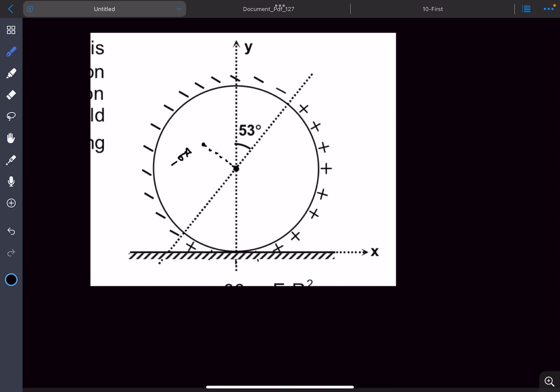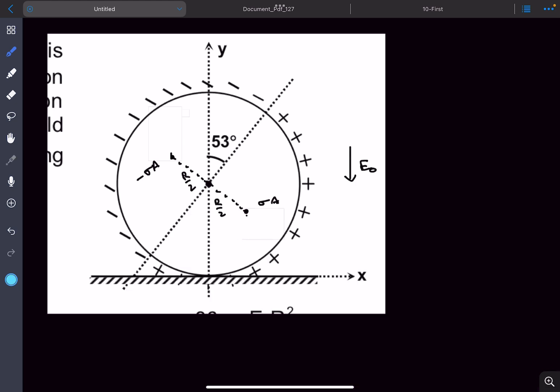Similarly, the positive charge becomes +σA at a distance R/2 from the center. This forms a dipole—a +q charge and -q charge separated by a distance. The dipole moment p equals the charge times the separation distance.